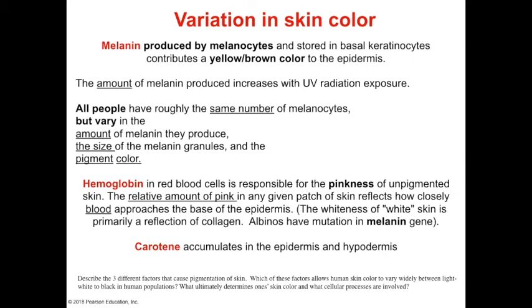There are no melanocytes in your palms and the bottoms of your feet, so everyone is pretty much the same color in those locations. Melanin is one factor in skin color; another major factor is all the blood vessels in your skin, with pinkness coming from the hemoglobin of red blood cells — think of someone blushing to see the tone of their skin change. The last contribution to skin color is the amount of carotene obtained from diet that accumulates in the epidermis and hypodermis, giving skin a more orangey color.